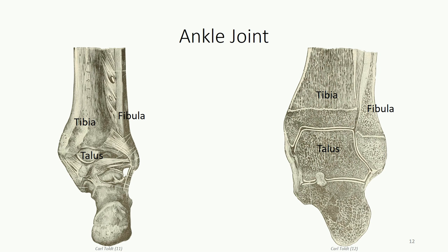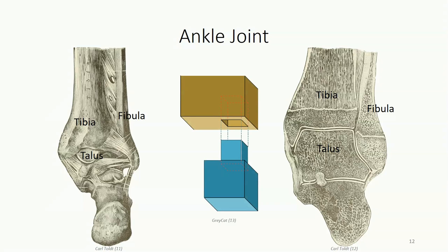The ankle joint is a synovial hinge-type joint between the tibia, fibula, and talus. The weight-bearing portion goes from the shaft of the tibia directly into the superior surface of the talus, with surface area greatly increased by contact between the talus and the medial and lateral malleoli. The ankle joint is often described as a mortise and tenon — a term from architecture describing a square peg (the tenon) embedded in a square slot (the mortise), as seen in log cabin designs.